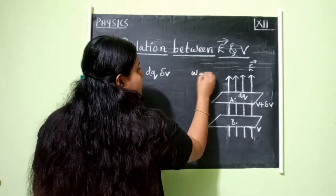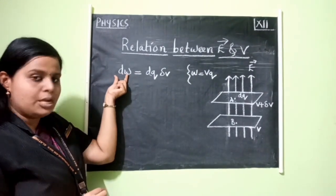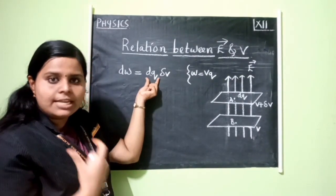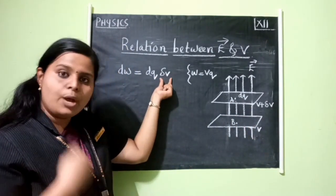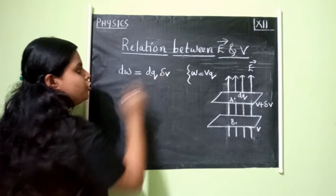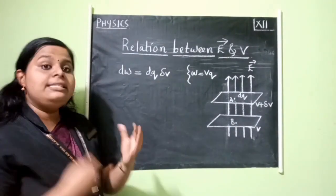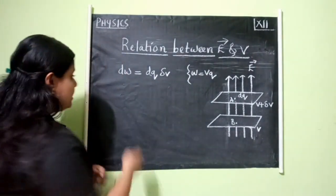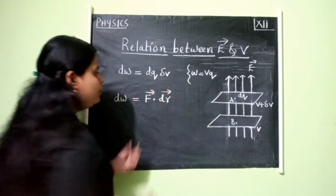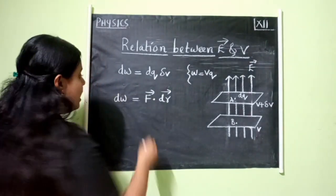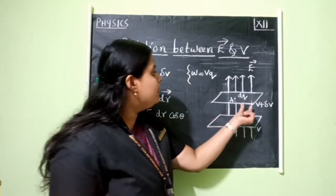We know that work done W = V × Q. So in this case, the small amount of work done dW = dQ × δV. Now there is another expression for work done: dW = F · dr = F dr cos θ. In this case, the force is along the electric field direction, but the displacement from A to B is in the opposite direction. So the angle between F and dr is 180°, and cos 180° = −1. Therefore, the small amount of work done dW = −F dr.